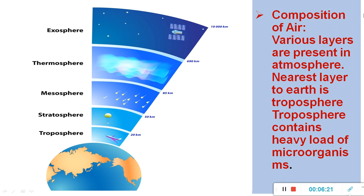This diagram shows the different layers of the atmosphere. The nearest layer, up to 20 km from the earth, is called the troposphere, and it consists of the heaviest load of microorganisms — maximum numbers of microorganisms are present in this layer. The next layer, 20 km to 50 km, is the stratosphere. Then 50 km to 85 km is the mesosphere. Then 85 km to 690 km is the thermosphere, and the last layer from 690 km to 10,000 km is the exosphere. The most populated layer for microorganisms is the troposphere.